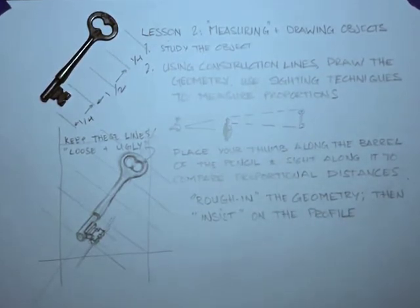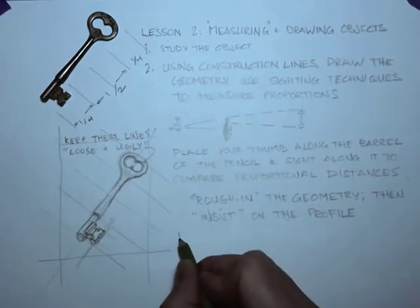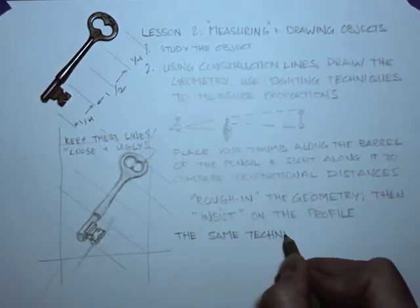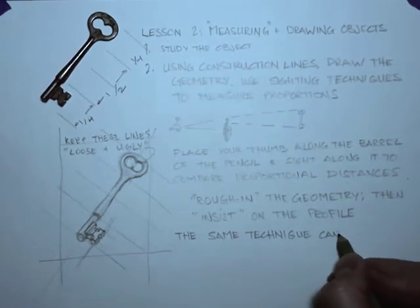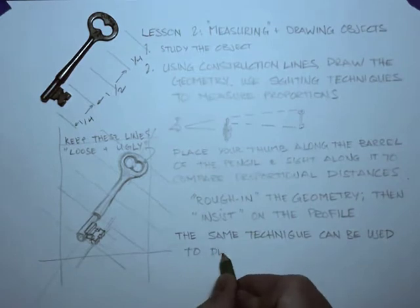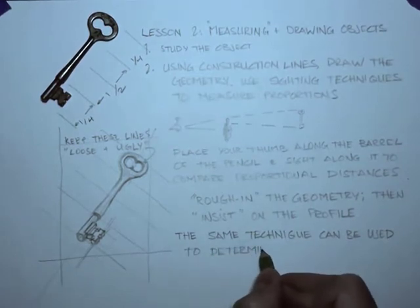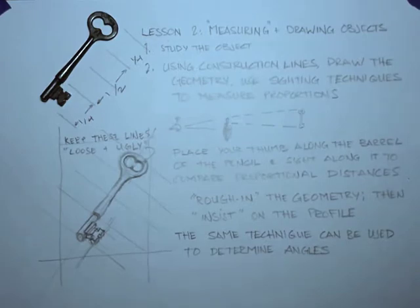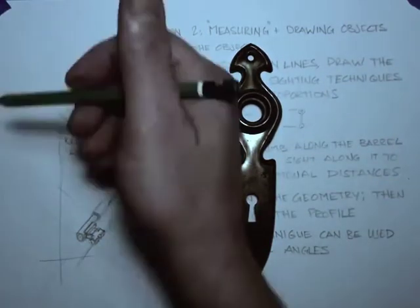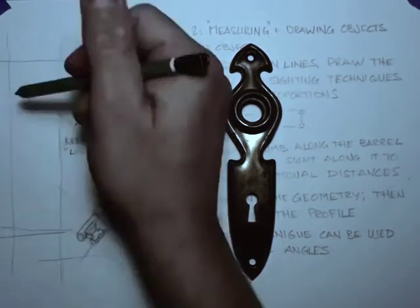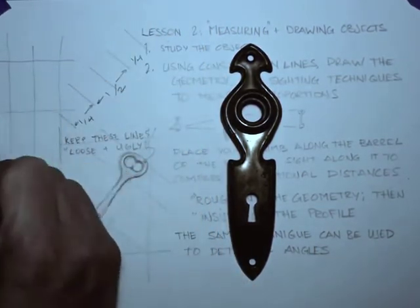This technique of measuring and sighting can be used for the angles of the object that we are studying, as well as the proportional relationships of its parts. We can hold the pencil and look along it to see and transfer those angles better.